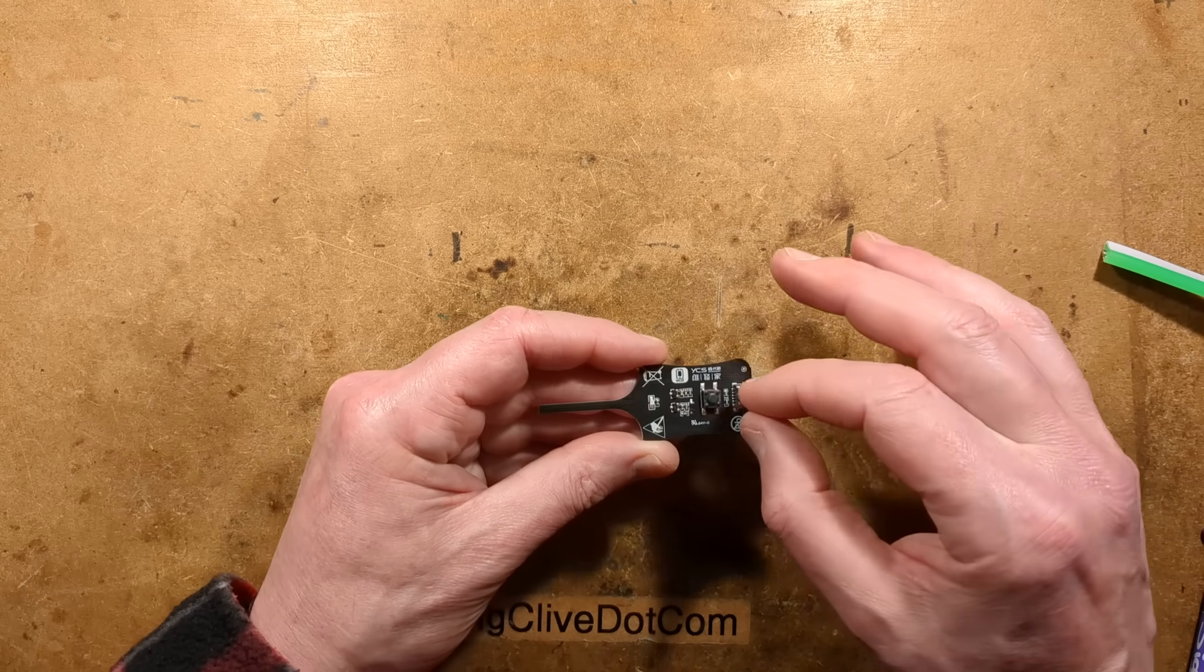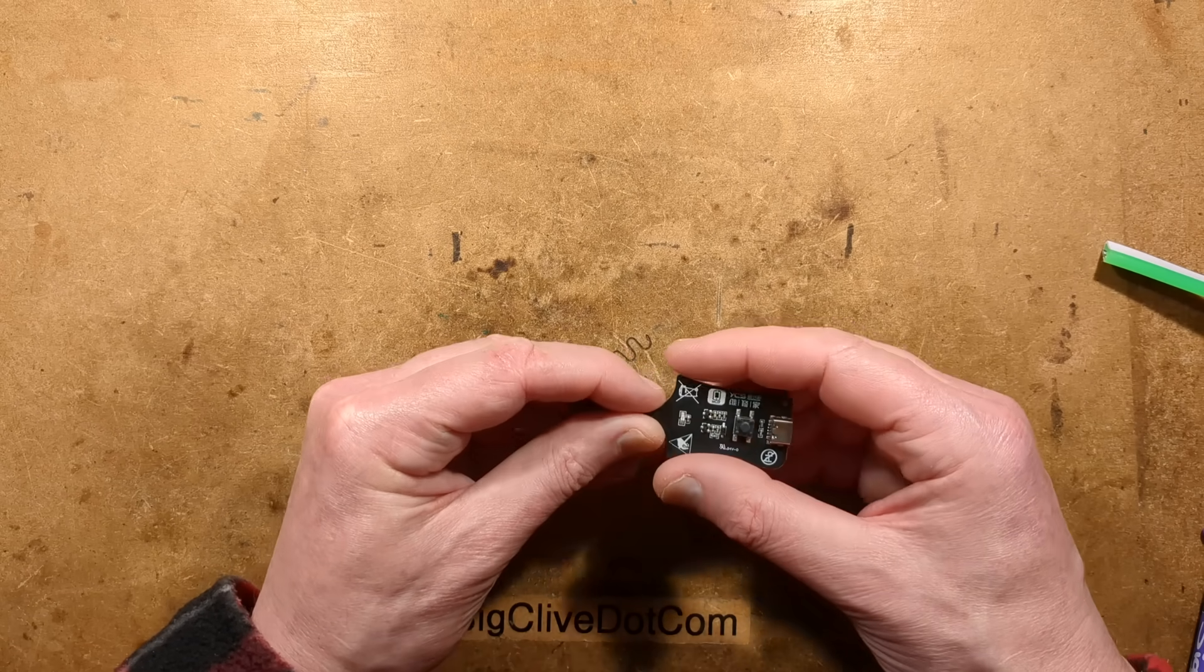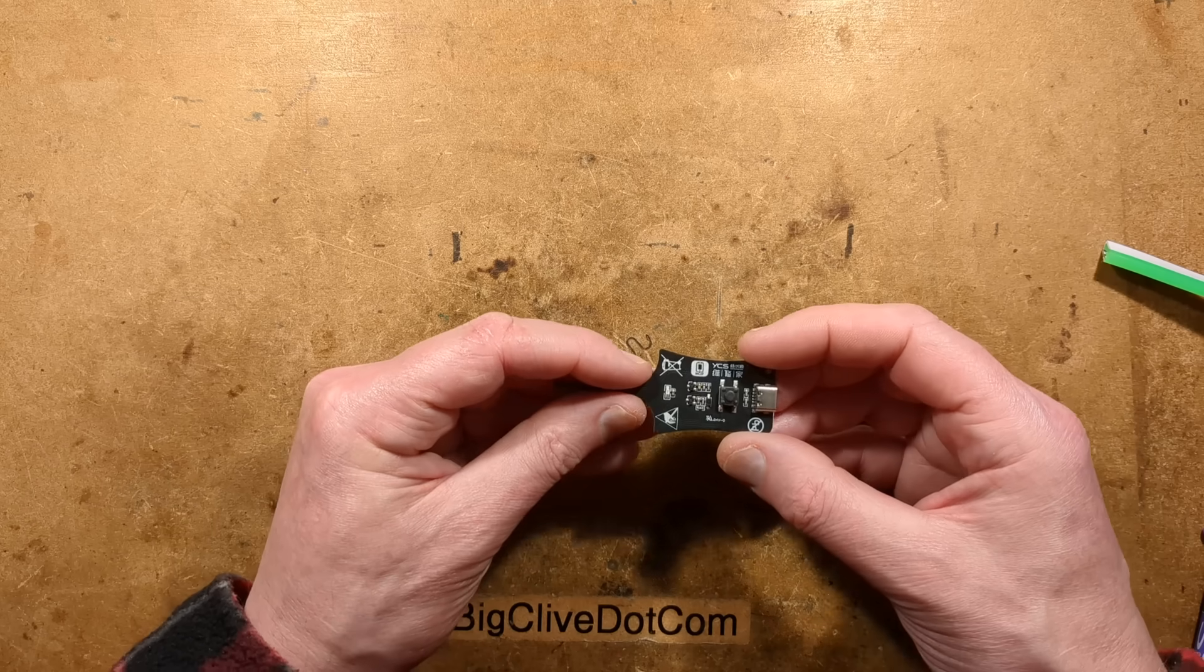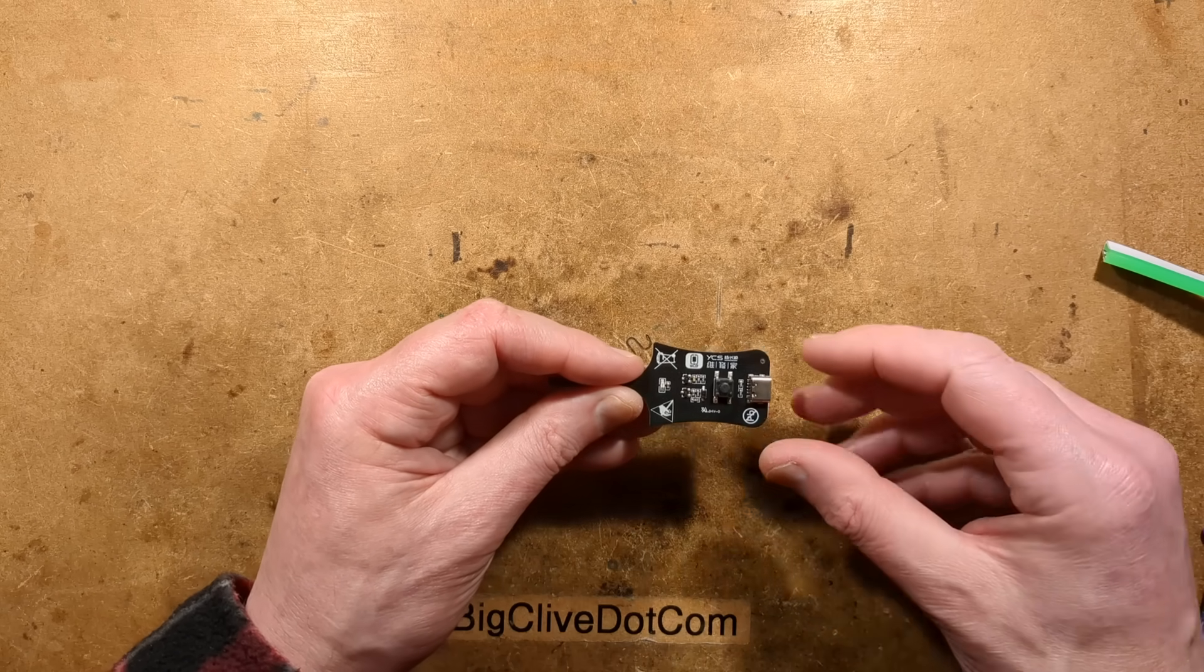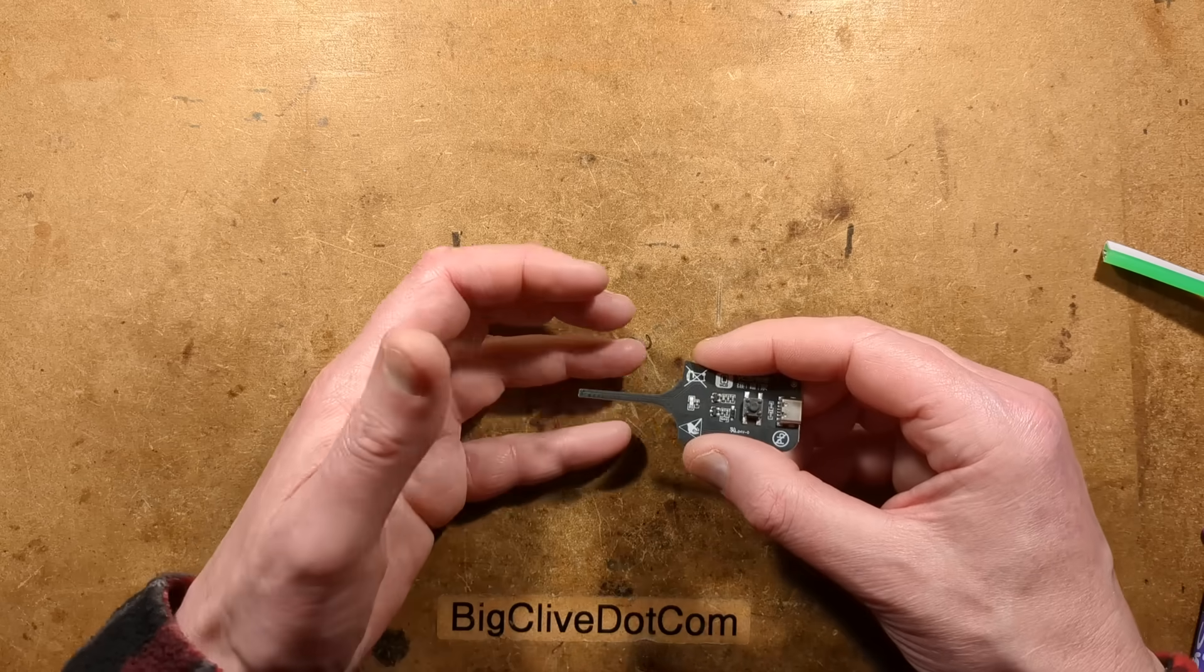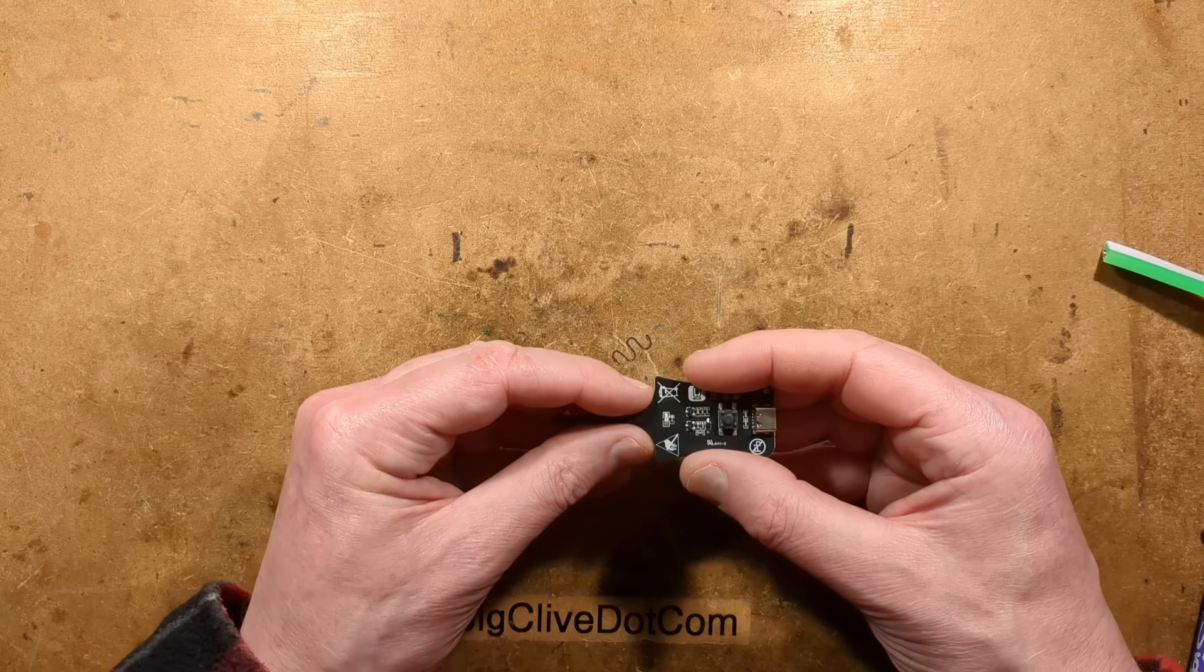But this is the USB-C version with the strangely pointless button. The temptation would be just to remove the button and bridge it out, and maybe even put some heat-shrink sleeving across this, because it's got these symbols like observe anti-static precautions. But what's the point when you're fingering a bare circuit board? Very strange.